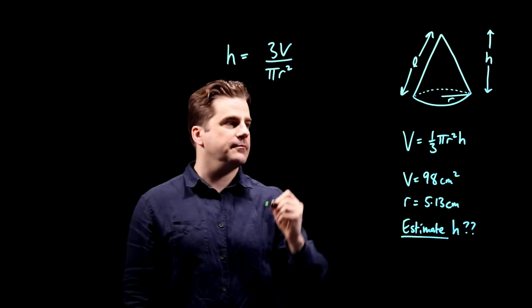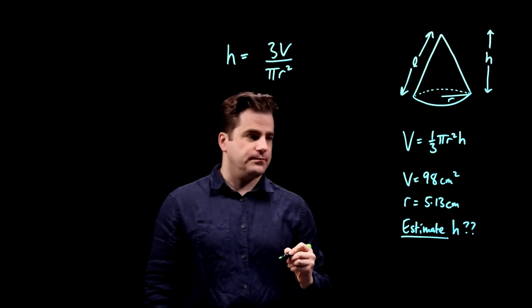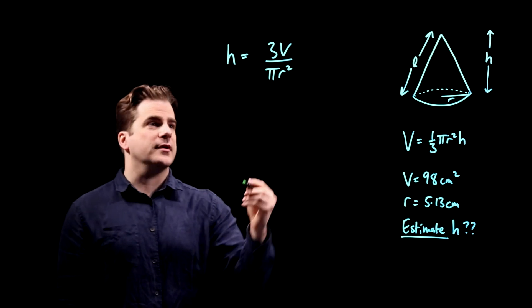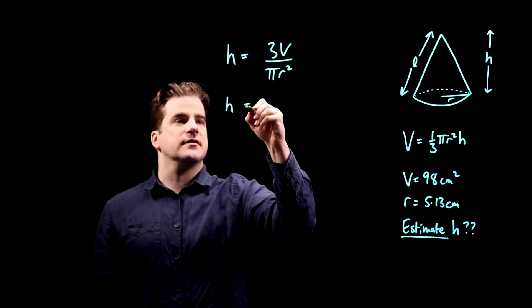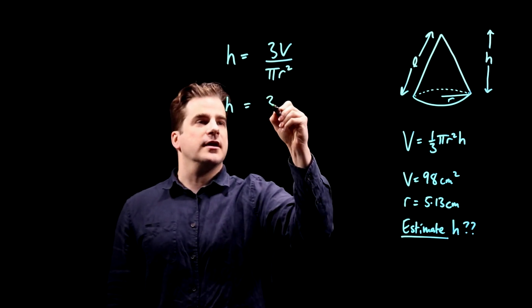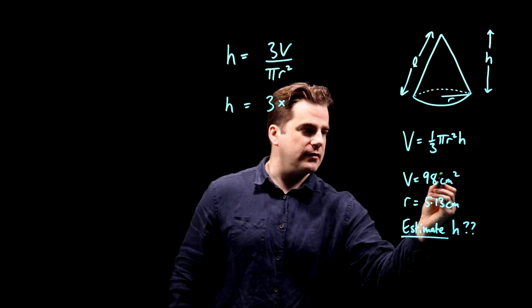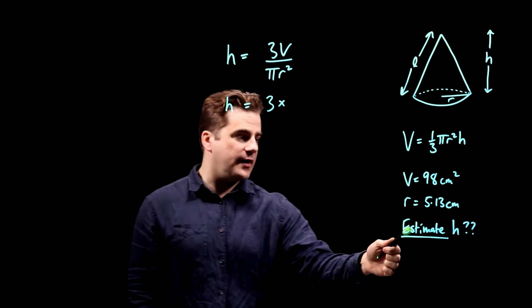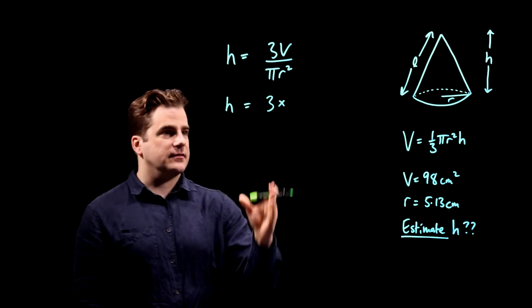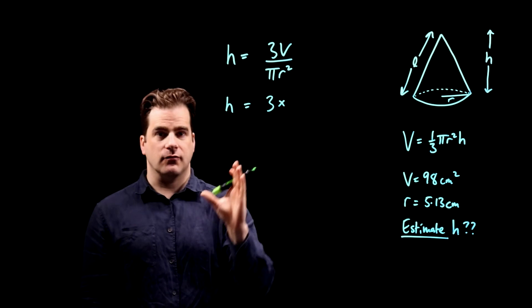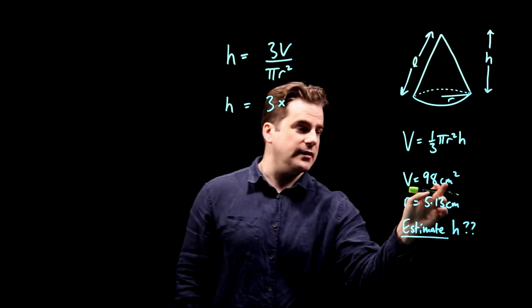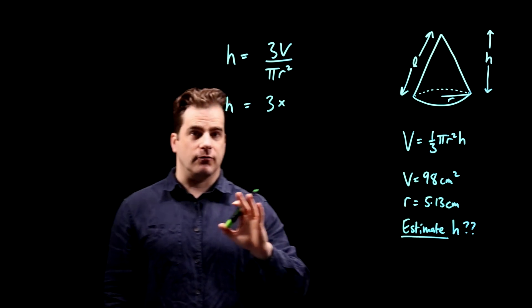Now, put in the numbers. h is equal to 3. Now, I'm going to write the numbers exactly as we've been given them. I know we're estimating, but initially, write them in as the actual number, don't round them yet.